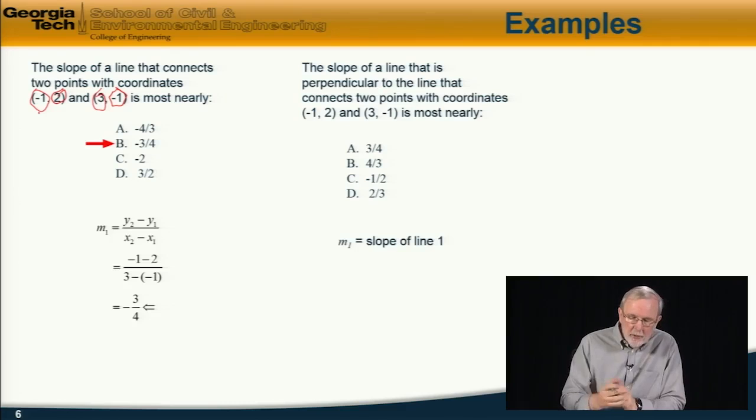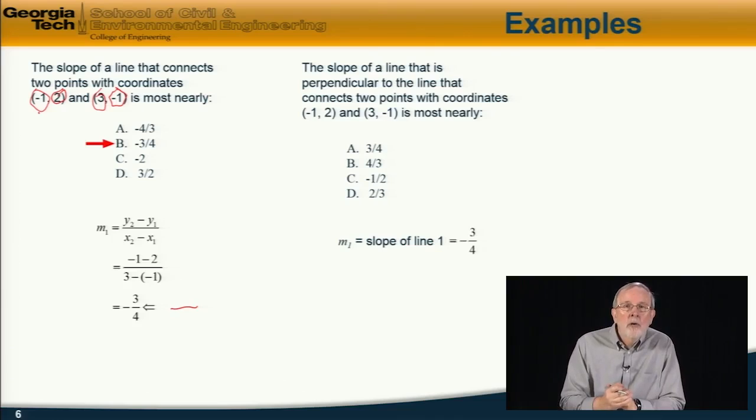So in this case, we already know the slope of the line, of line 1, we've already calculated it here, I'll call that m1, is equal to -3/4.